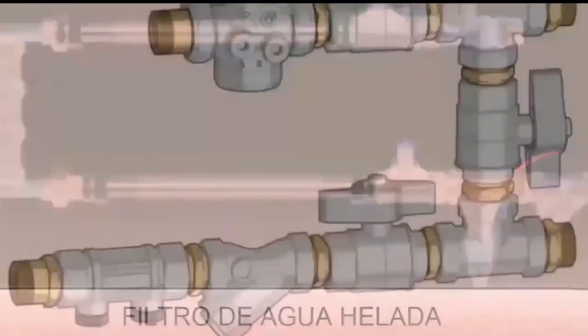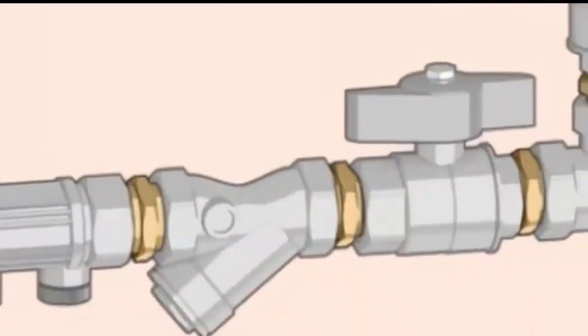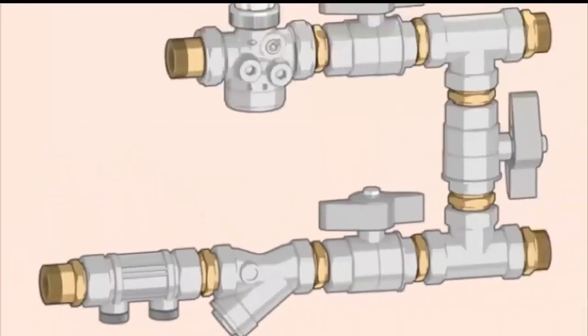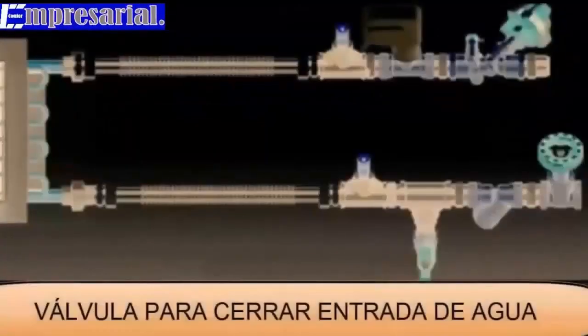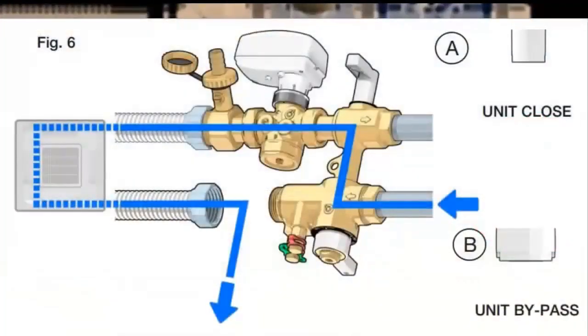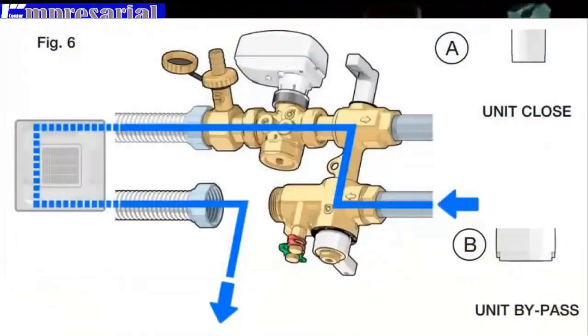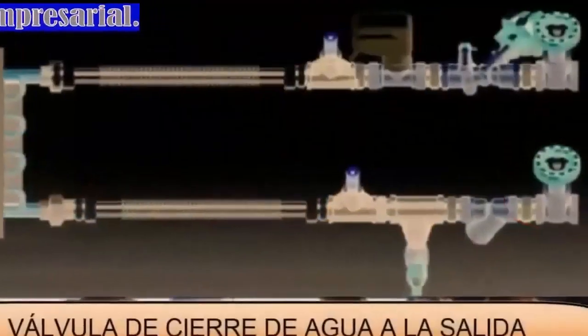Water filter at the entrance: in order to prevent impurities in the water from entering the system. Valve DRV: this double function valve allows us to regulate the flow of water as independently as possible of the pressure. Gate valves at the inlet and outlet: in case of any maintenance, these valves seek to close the total flow of water to the exchanger.